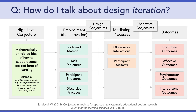Another question is: how do I talk about design iteration in my proposal? The short answer is you don't have to. By laying out your conjecture map, you are showing that you have all of the components of a design study that can be iterated upon once it's implemented the first time. Of course, you won't know what the data says and what the next iteration will look like, so that's beyond what you have to include in your proposal. What's important is that you show a logical setup that is poised for successful iteration in the future.